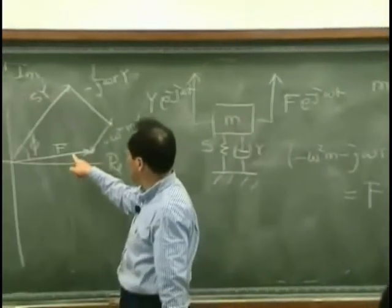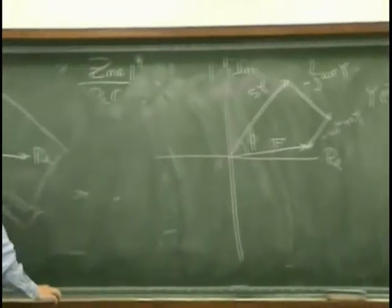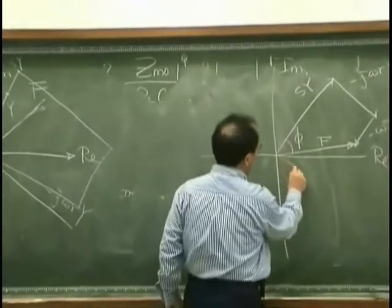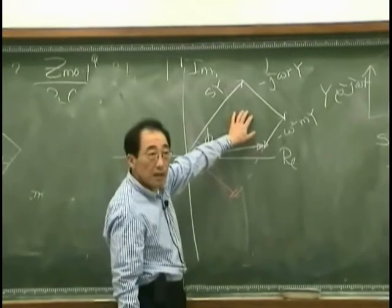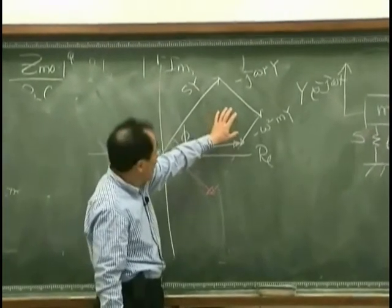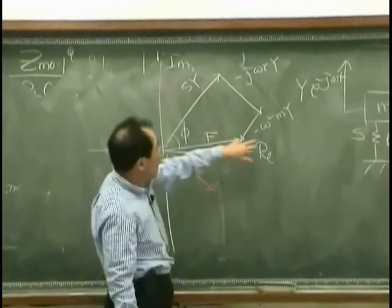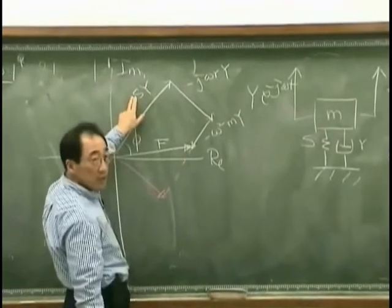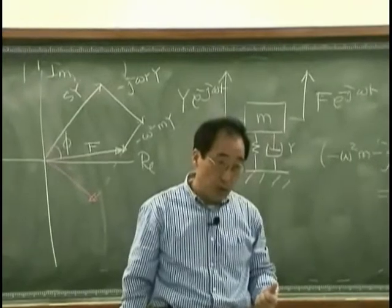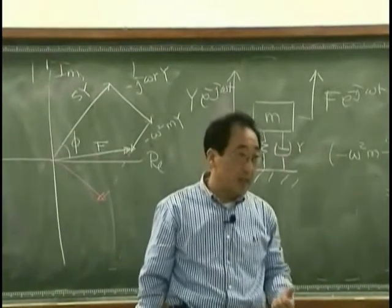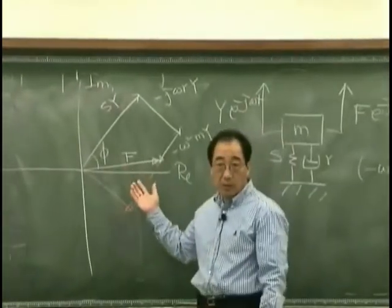What if the force has the same phase with the velocity? In this case, this one is equal to that one, means that minus omega square M equal to S. That will provide us omega square is equal to M divided by S. That is resonant frequency. That means in this case, we will have a resonance.